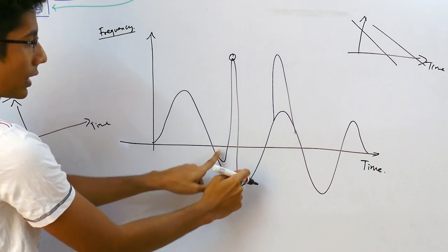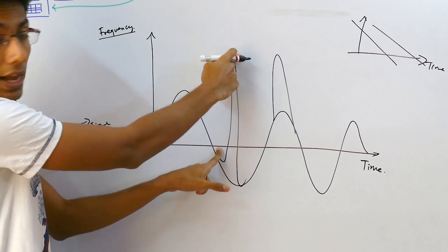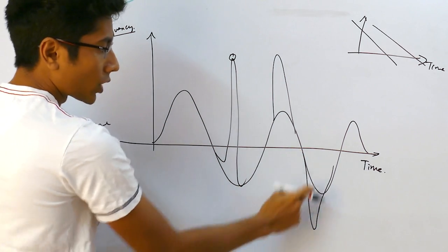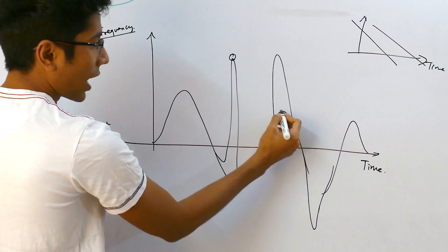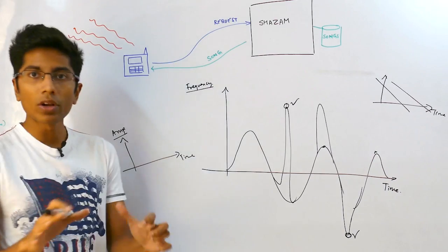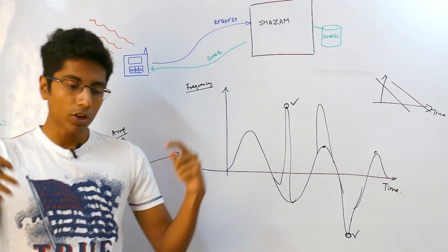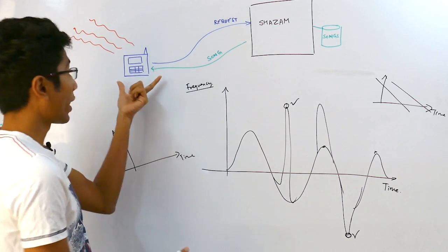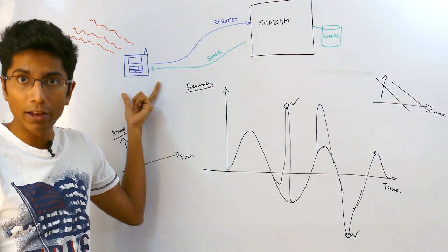Around this there are really low points and at this point there's a really high point. Similarly maybe there is pin drop silence at this part of the song. Around these there's high points but over here there's a really low point so you want to note this down too. You want to note down basically interesting points because despite noise they are the ones which are likely to survive when you're recording the clipping in your mobile phone.